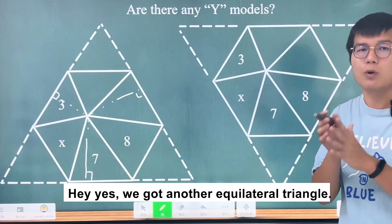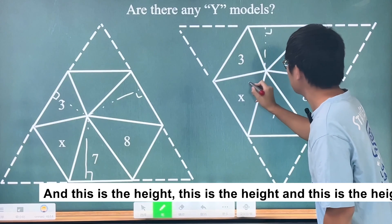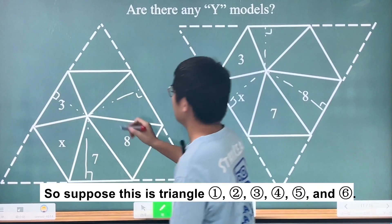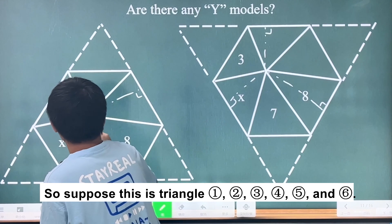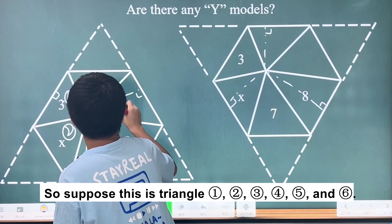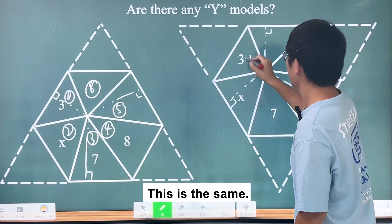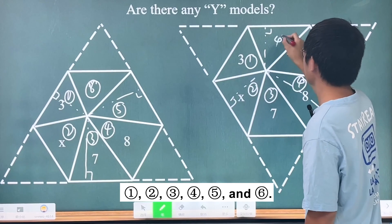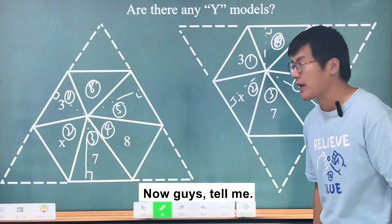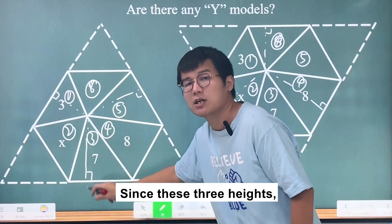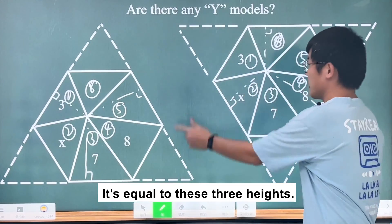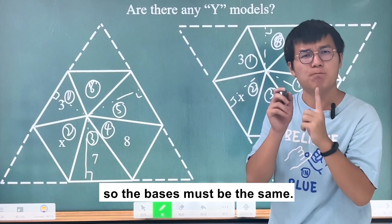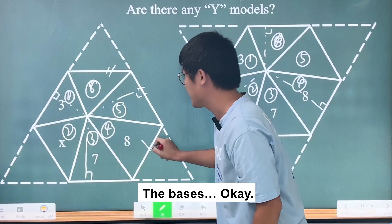Look at another approach: we've got another equilateral triangle, and these are its three heights from the interior point. Suppose we label all six triangles in the regular hexagon as triangles 1, 2, 3, 4, 5, and 6. Since these three heights sum to a constant, and this is a regular hexagon so all bases are the same, we apply the Y model to both equilateral triangles.